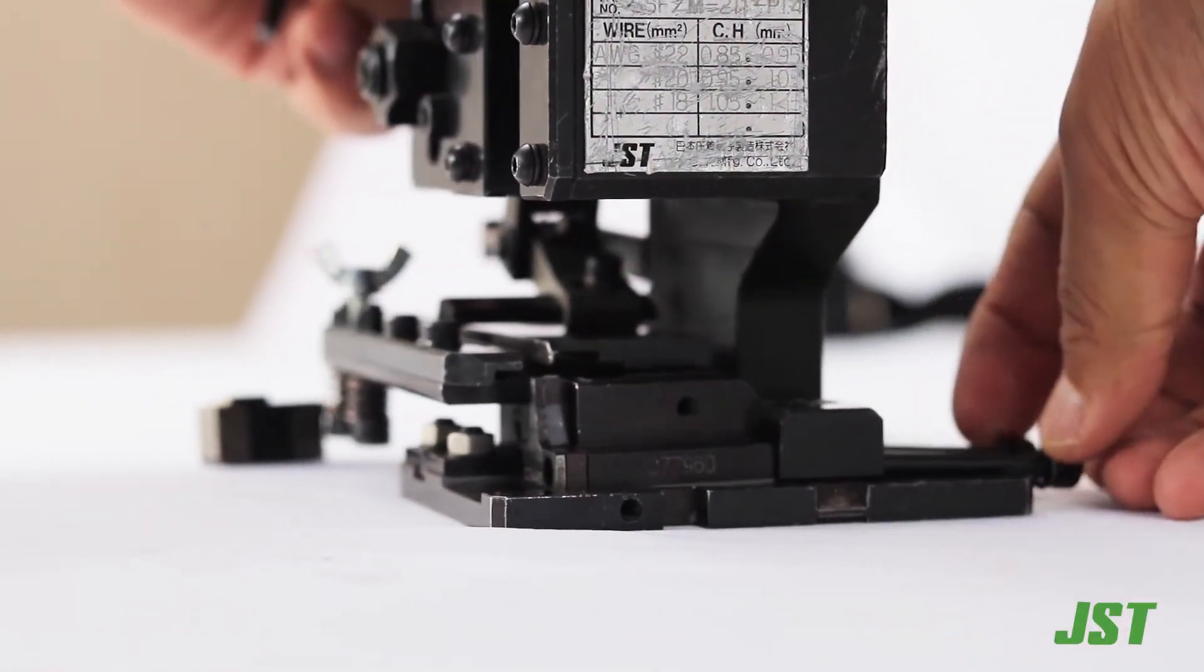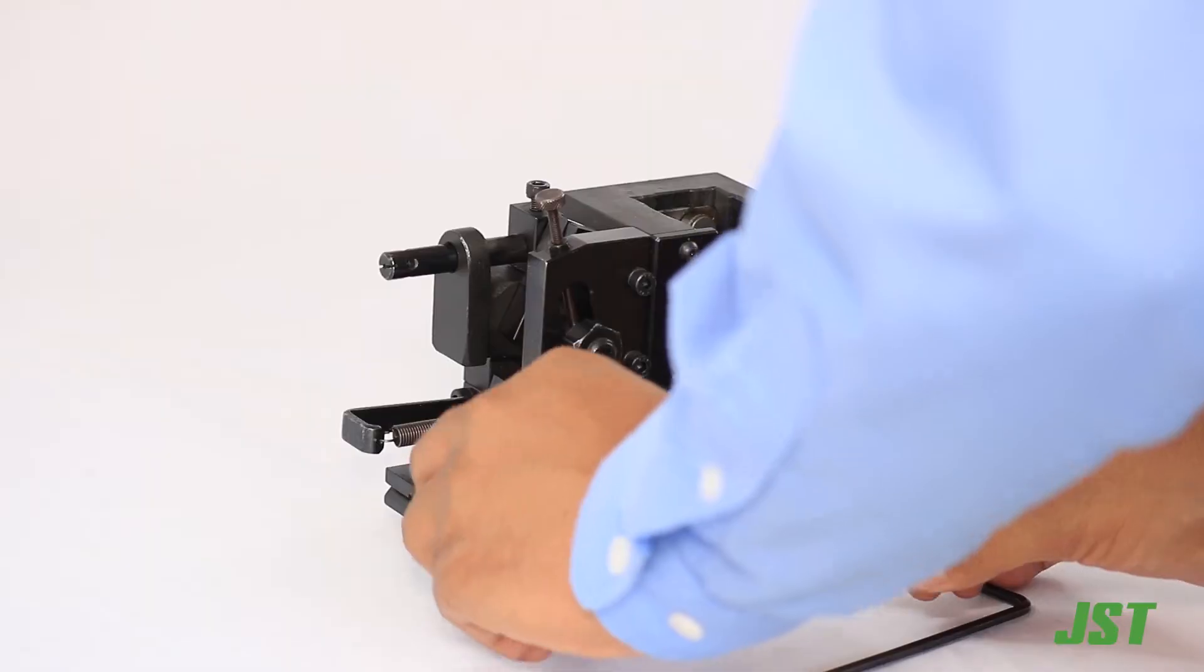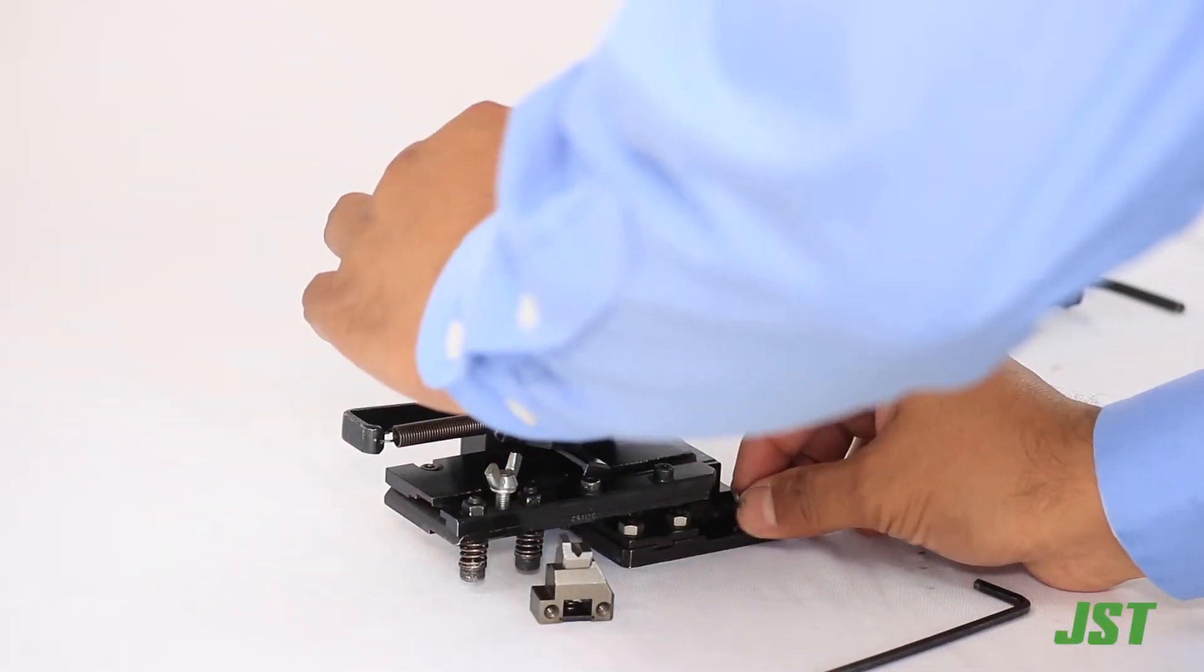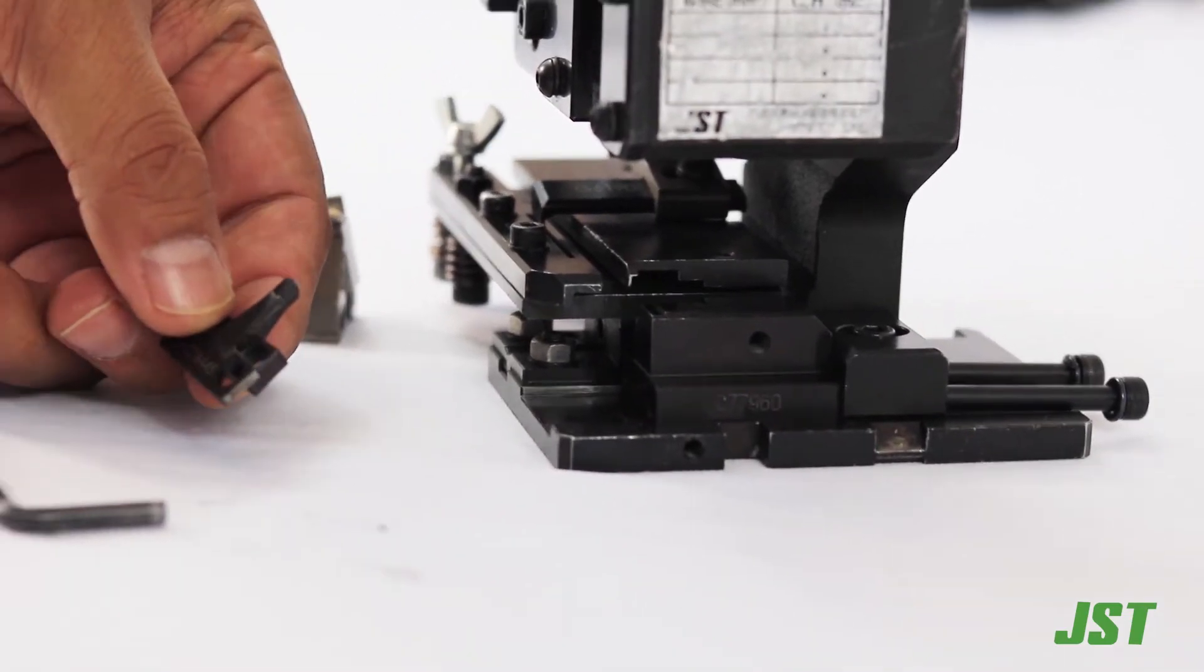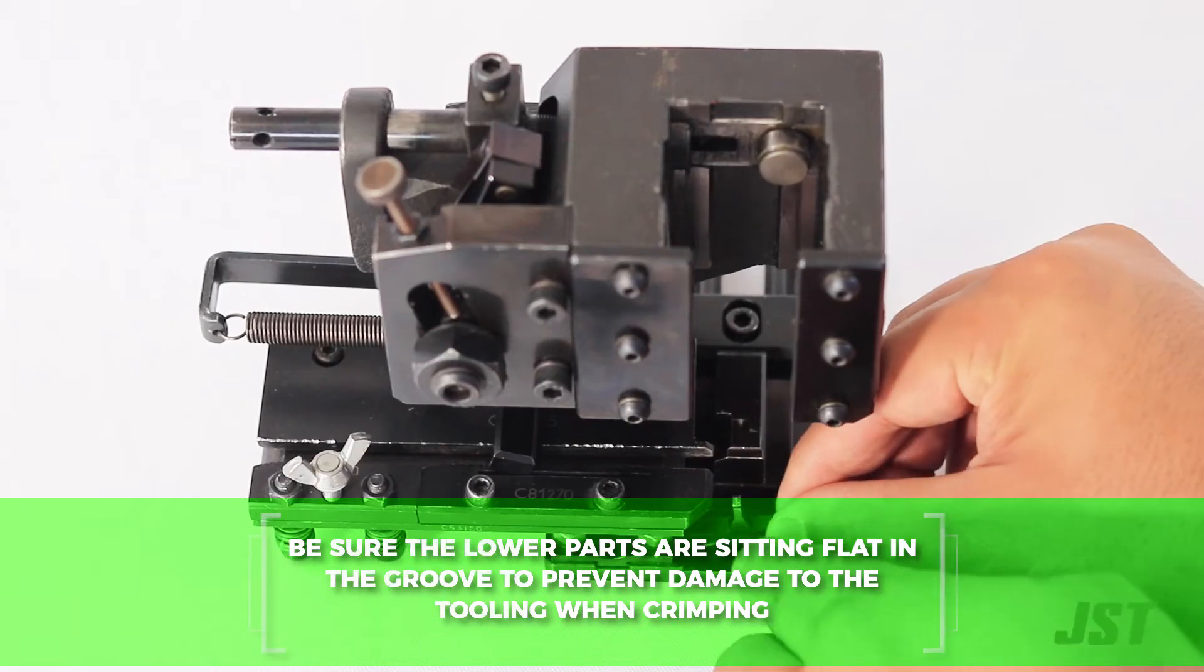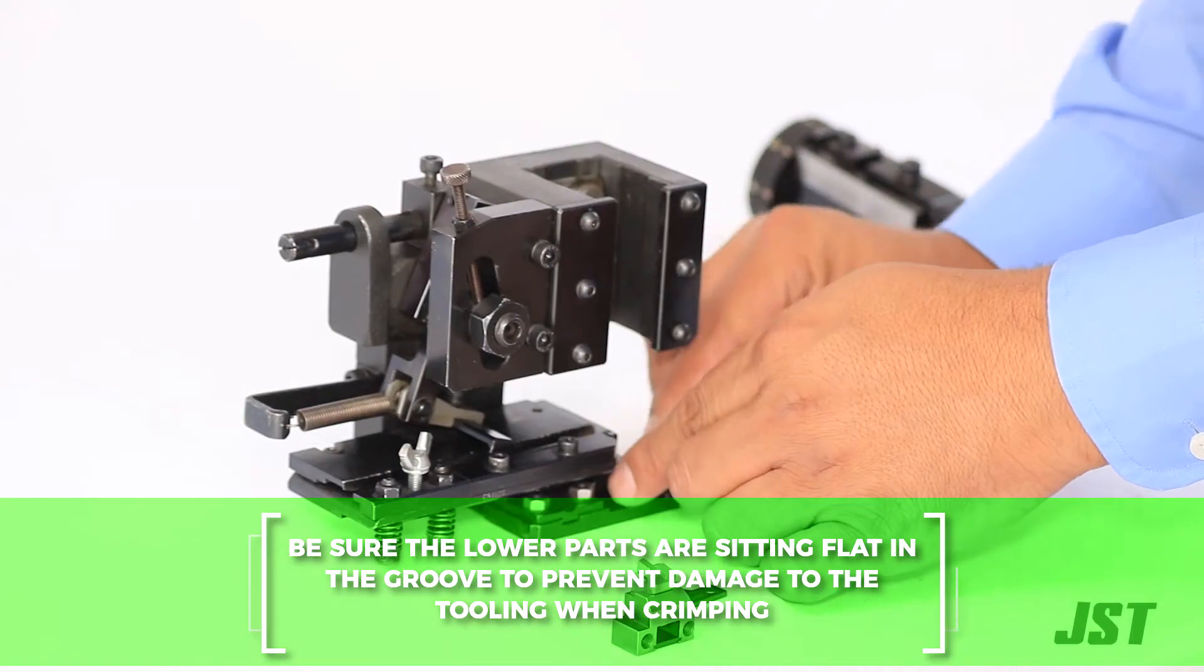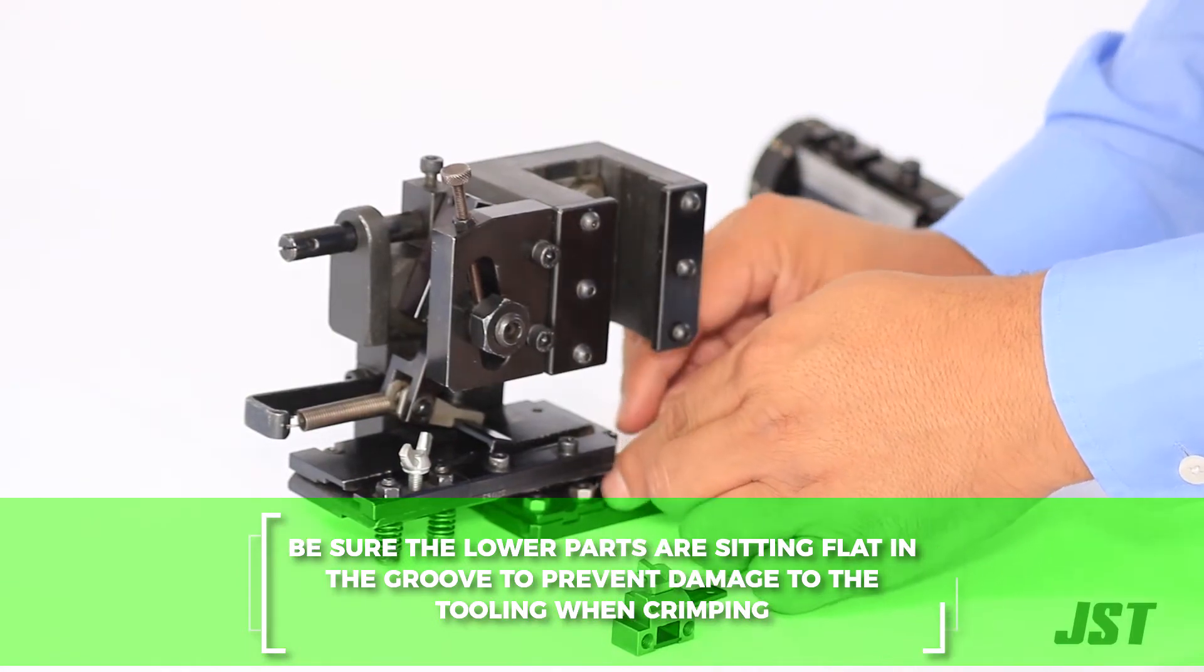Remove the damaged anvil and replace it using the applicator's blueprint to ensure that the anvil being replaced is the correct part number. Reinstall the parts following the assembling sequence of anvils and spacers as shown in the applicator's blueprint.